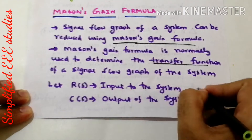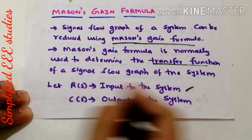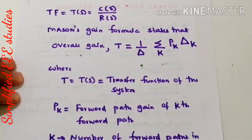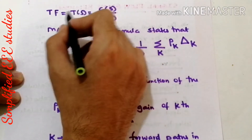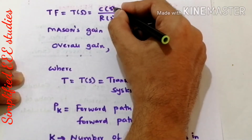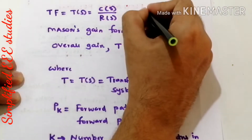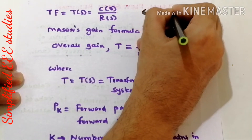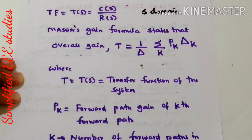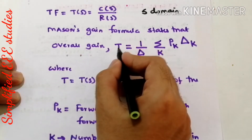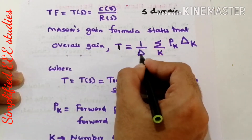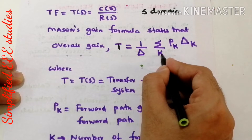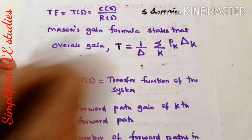Let us consider R(S) as the input of the system and C(S) as the output of the system. The general formula for transfer function is TF, or T(S), given by C(S) by R(S), all in the S domain. Mason's gain formula gives the transfer function T equal to 1 by delta, into sigma k of pk into delta k.